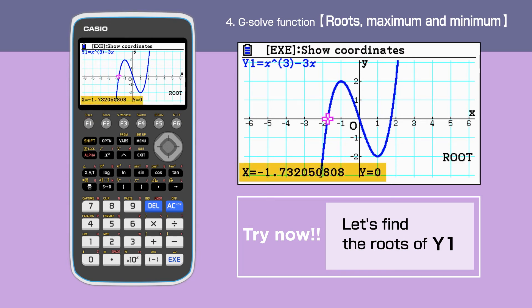The first root is found, and is minus 1.732. Move the cursor to find the next root. The second root is 0. Move the cursor again to find the third root. The third root is 1.732.